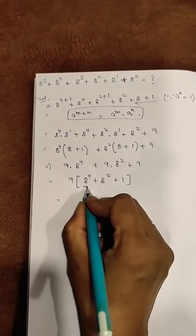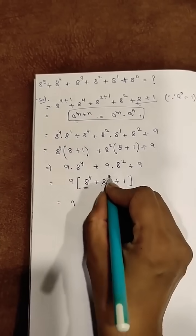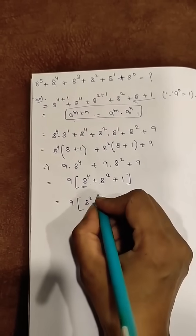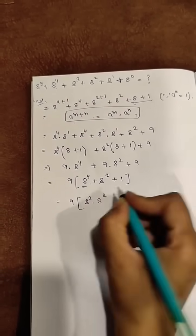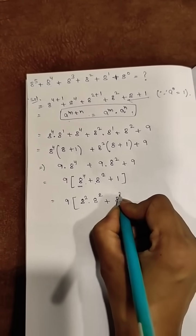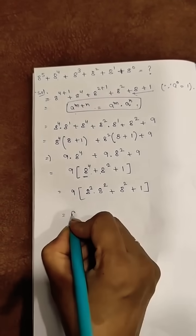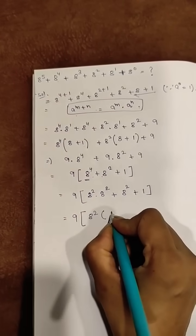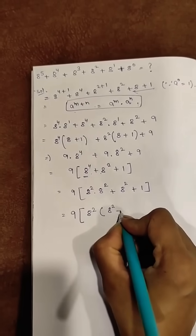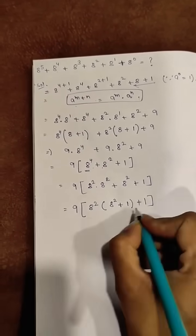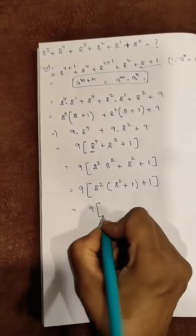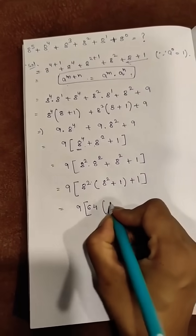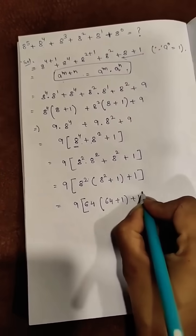Now again break this in terms of 8 raised to the power 2: 8 raised to the power 2 into 8 raised to the power 2, plus 8 raised to the power 2, plus 1. Again take 8 raised to the power 2 common; you get 8 raised to the power 2 into (8 raised to the power 2 plus 1) plus 1. Now 8 raised to the power 2 can be written as 64, giving 64 plus 1 plus 1.